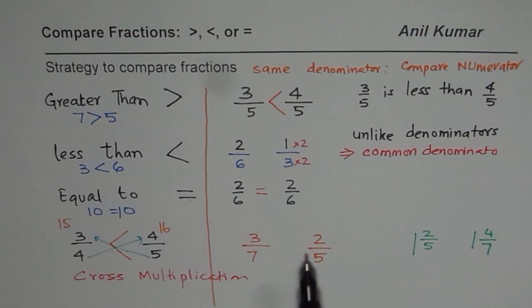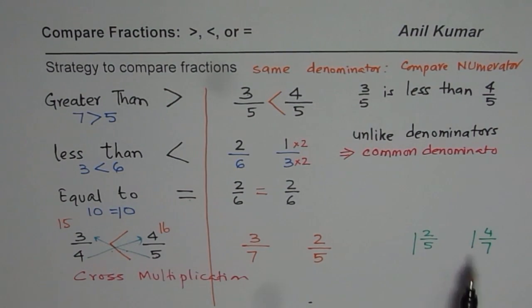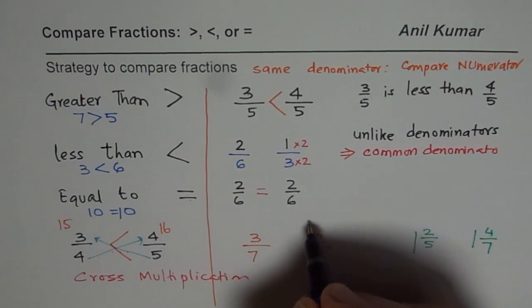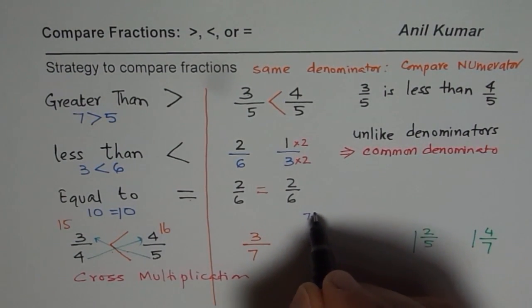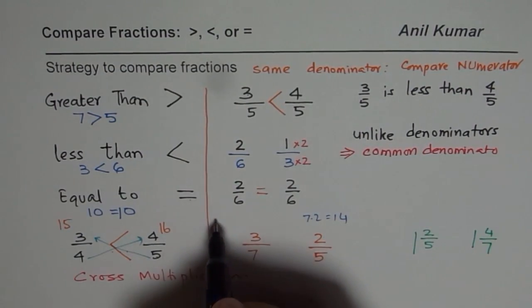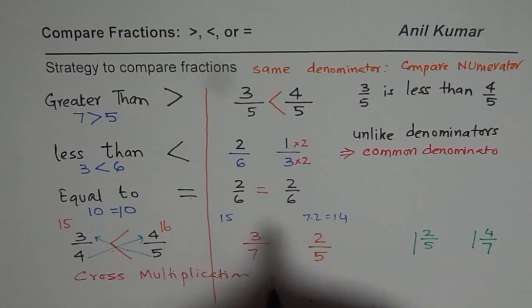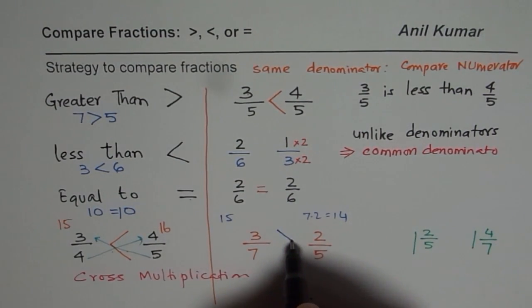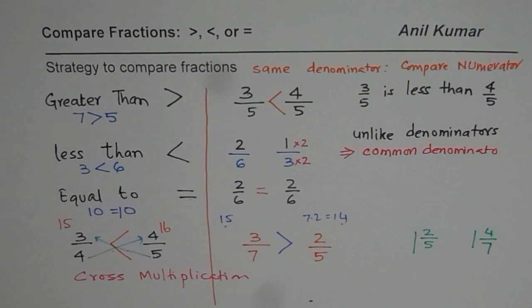You can apply cross multiplication to the practice problems — pause the video, answer, and then look at my solutions. For 3 over 7 and 2 over 5, let us cross multiply: 7 times 2 is 14, and 5 times 3 is 15. Since 15 is greater than 14, we write greater than here.